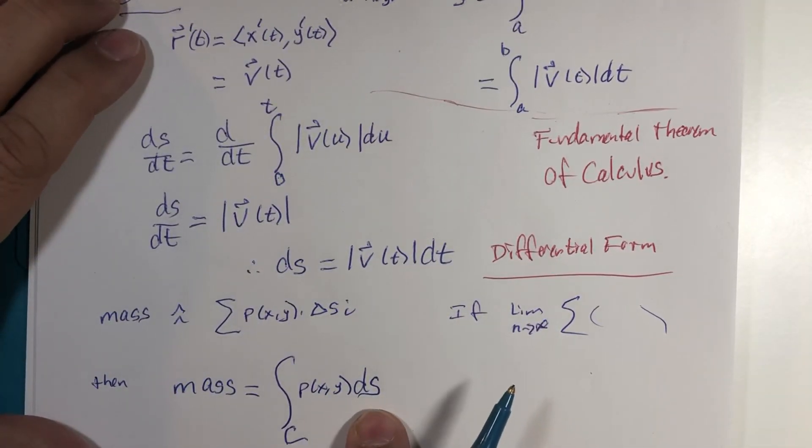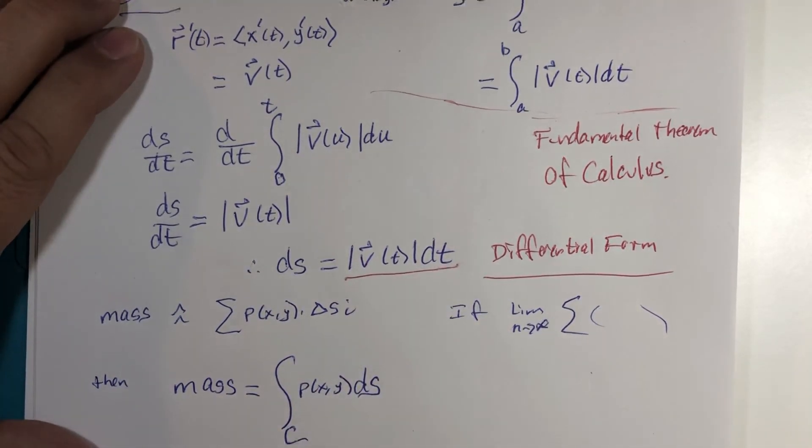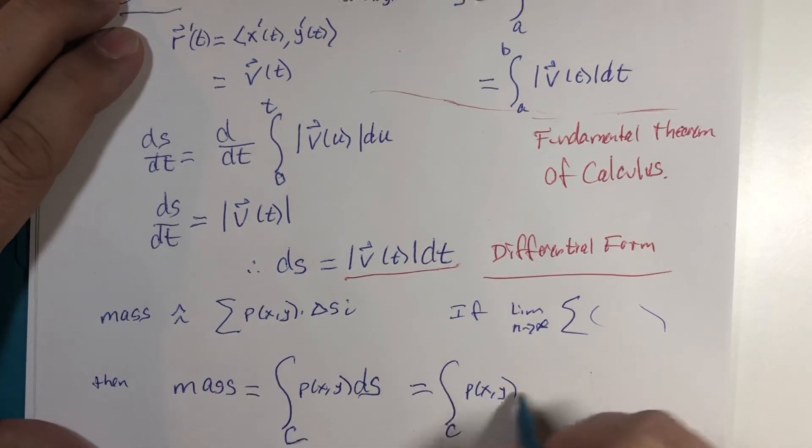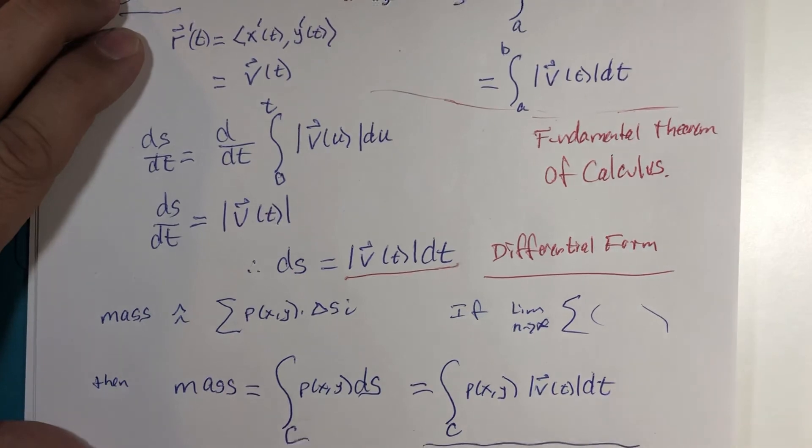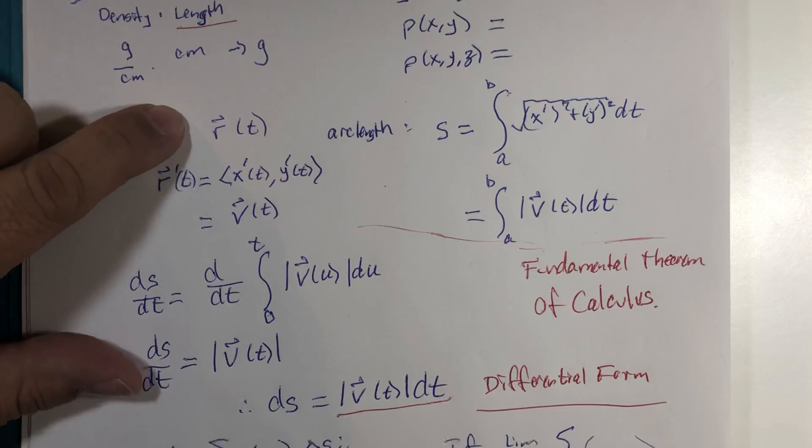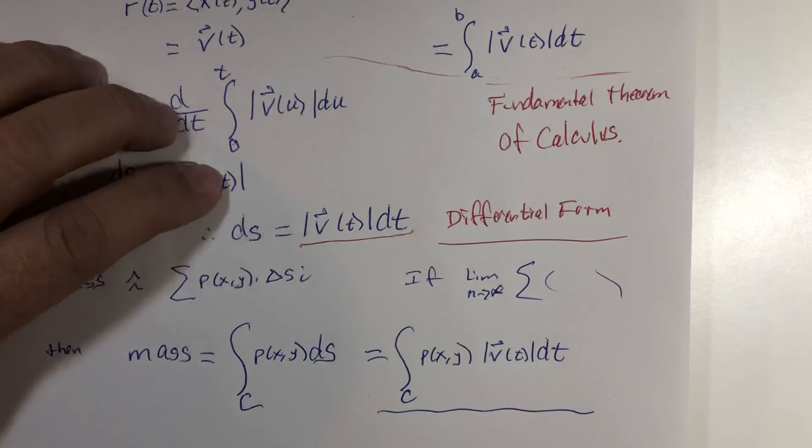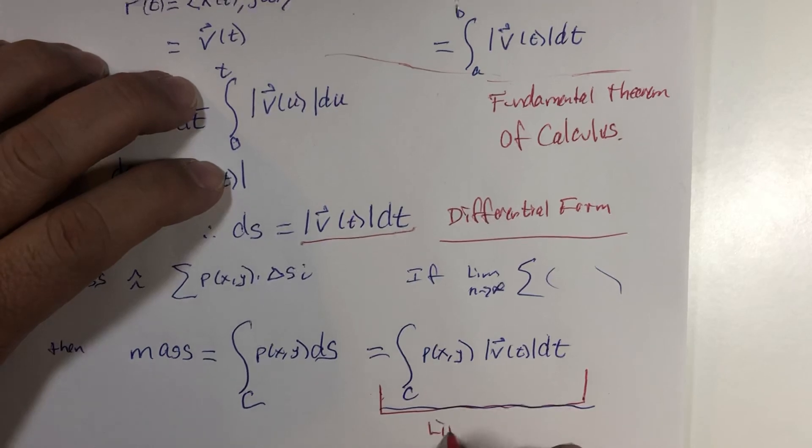Well, ds can be replaced by this: density function magnitude of velocity dt. This is something if we were given the curve r of t and we're given the density function rho, this is what our first line integral looks like.